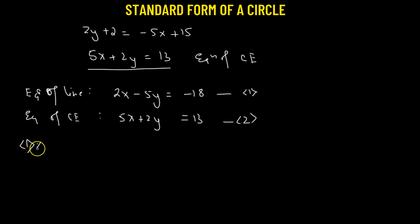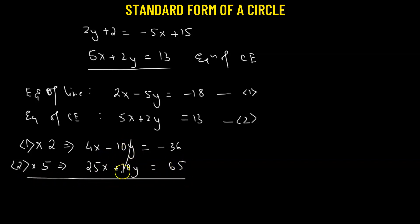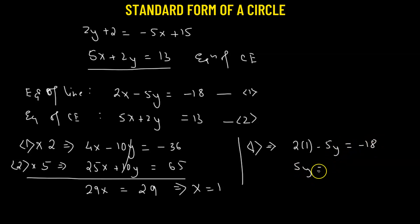Multiplying equation 1 by 2 gives 4x minus 10y equals negative 36. Multiplying equation 2 by 5 gives 25x plus 10y equals 65. Adding these two equations, the 10y terms cancel, leaving 29x equals 29, so x equals 1. Substituting x equals 1 into equation 1: 2(1) minus 5y equals negative 18, which gives 5y equals 20, so y equals 4.